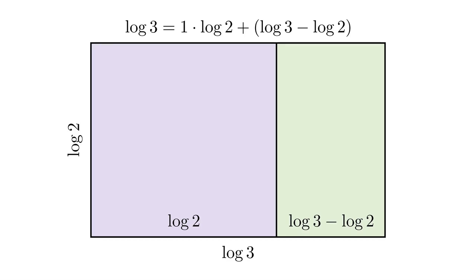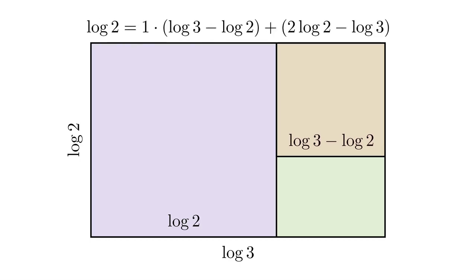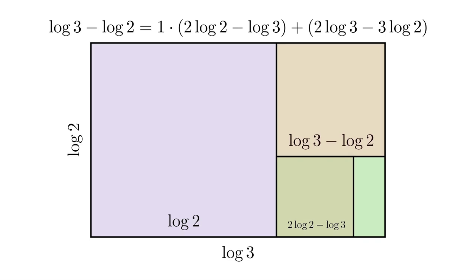Now I want to know how many times that remainder of log 3 minus log 2 fits into log 2. Well, I can only fit the one square in there. So log 2 is one copy of that previous remainder, log 3 minus log 2, plus this new remainder of 2 log 2 minus log 3. Now at this next stage, I can only fit one square in there. So I'll record this in the next step of the Euclidean algorithm.